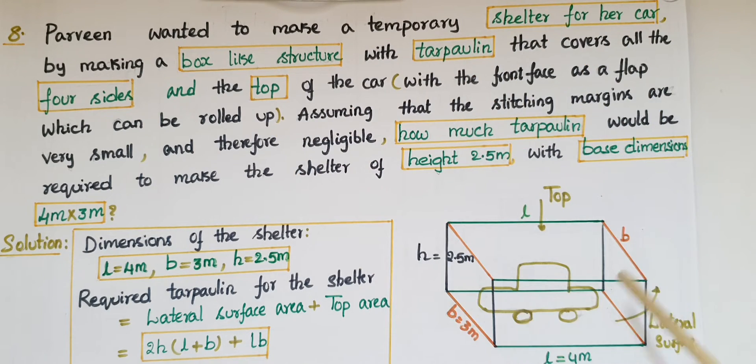So here Parveen wanted to make a temporary shelter for her car which is like a box like structure with tarpaulin that covers all the four sides including the front face. It is like a flap which can be rolled up and the top also covers. And assuming that the stitching margins are very small and therefore negligible.